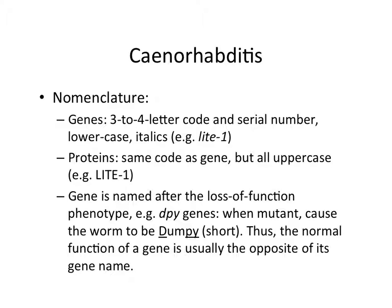Every gene is written in italics and lowercase - usually a three to four letter thing, like 'lite-1' here. So that's a gene name: lowercase, italics, some letters, and then a serial number. In case somebody later finds that there's a lite-2 gene, they can call it lite-2.